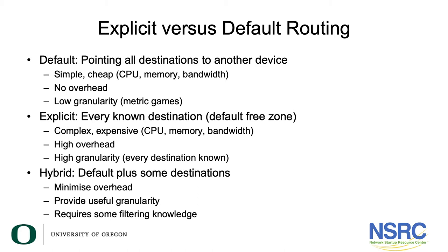Explicit routing also has very high overheads and high granularity. A compromise between default and explicit routing is hybrid routing. This contains the default routing plus some known destinations, which minimizes overheads and also provides useful granularity. Knowledge of filtering is required for implementing hybrid routing.